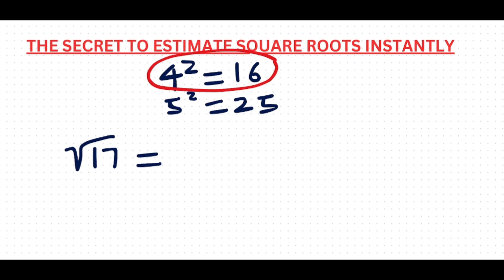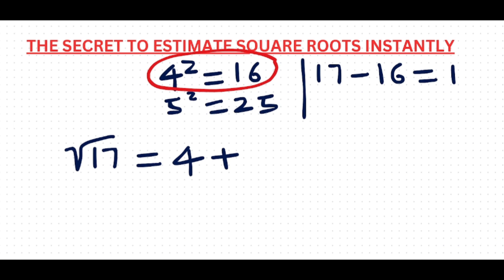So what is the square root of 16? Yes, it's 4. So you write 4, plus a fraction — a decimal. To find that fraction, the next step is you take the number 17 (since we're finding the square root of 17), then subtract 16, because that's the nearest perfect square. The answer is 1, so 1 becomes the numerator of the fraction.